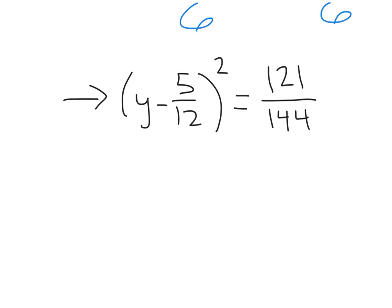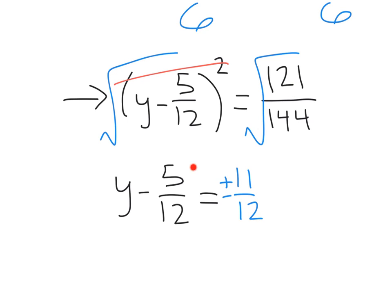Alright, hang in there. Square root both sides of your equation. It looks like we're going to get lucky. This is not going to be too difficult after all. We see that 121 square root is 11, 144 square root is 12. So, we get y minus 5/12ths equals plus or minus 11/12ths.